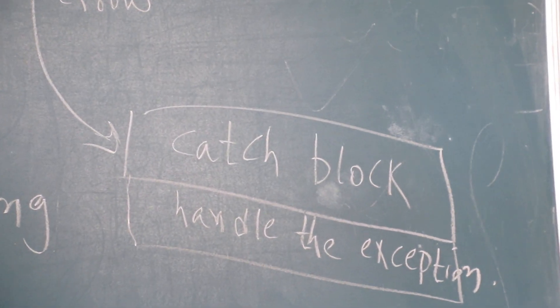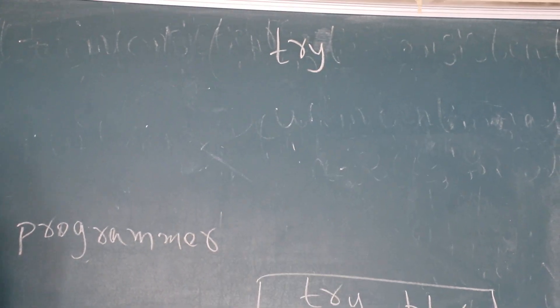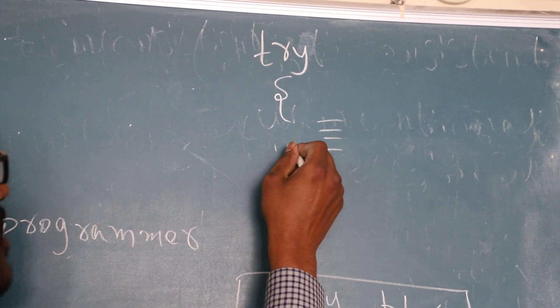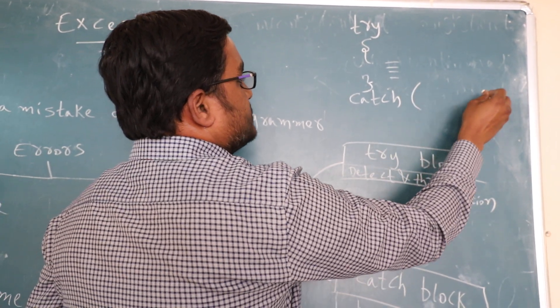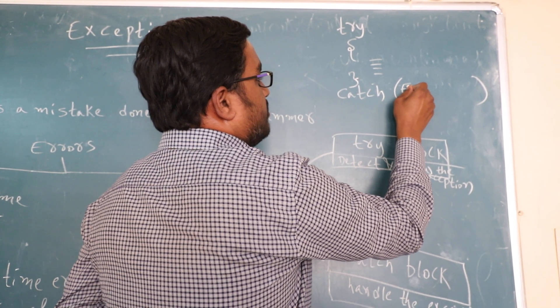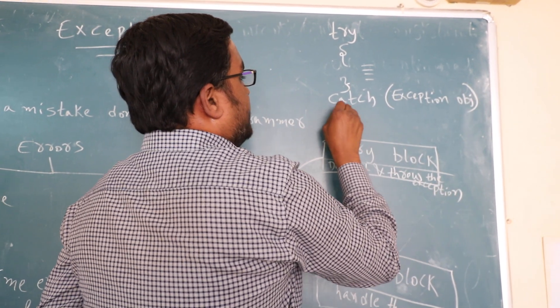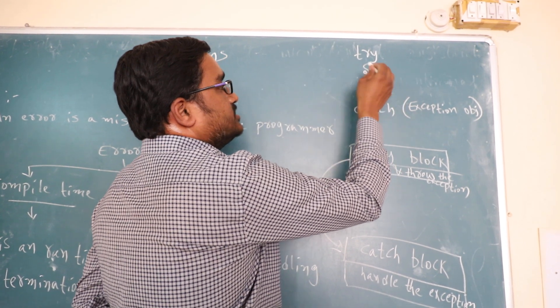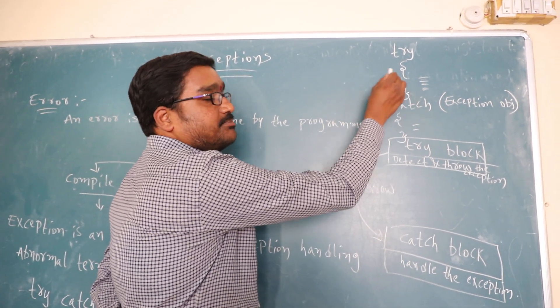The general syntax of this exception handling is: try followed with flower bracket, then some lines of code, followed with catch. Catch, this catch contains an argument. That argument is of which type, it may be of some exception type. And this try block must contain the statements which may cause exception. Always the statements which may cause exceptions must be written within that try block.